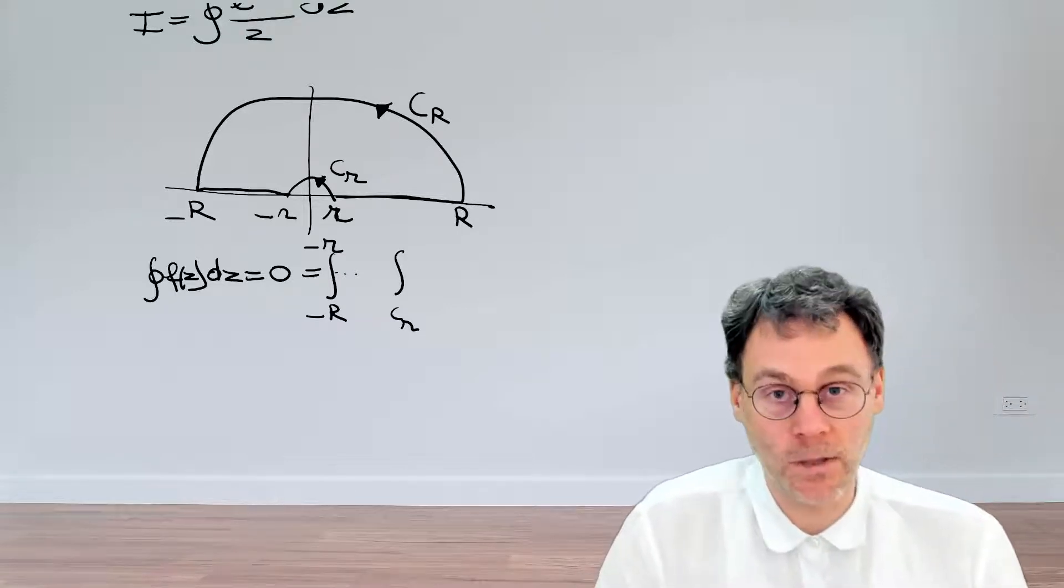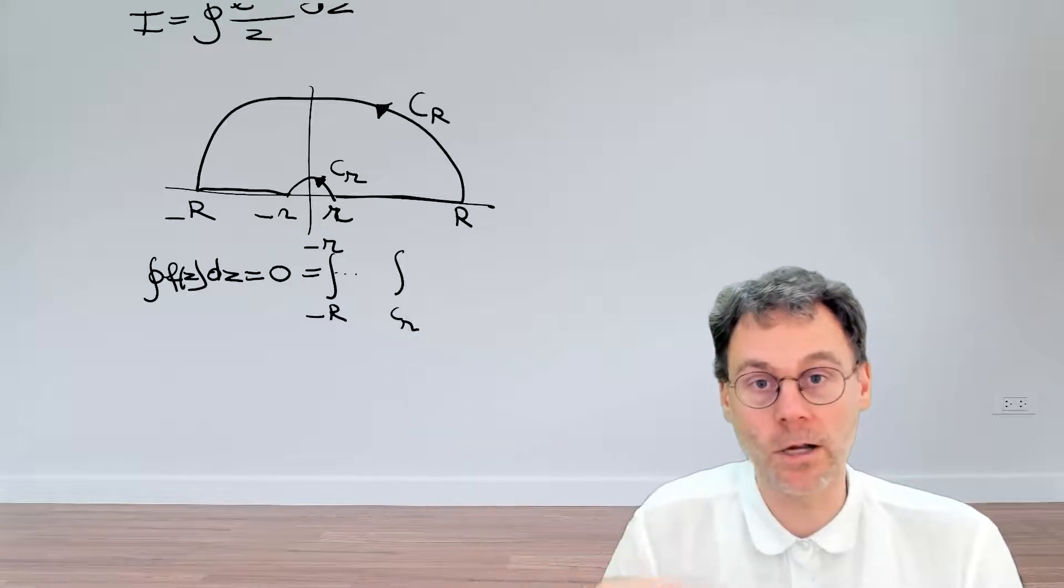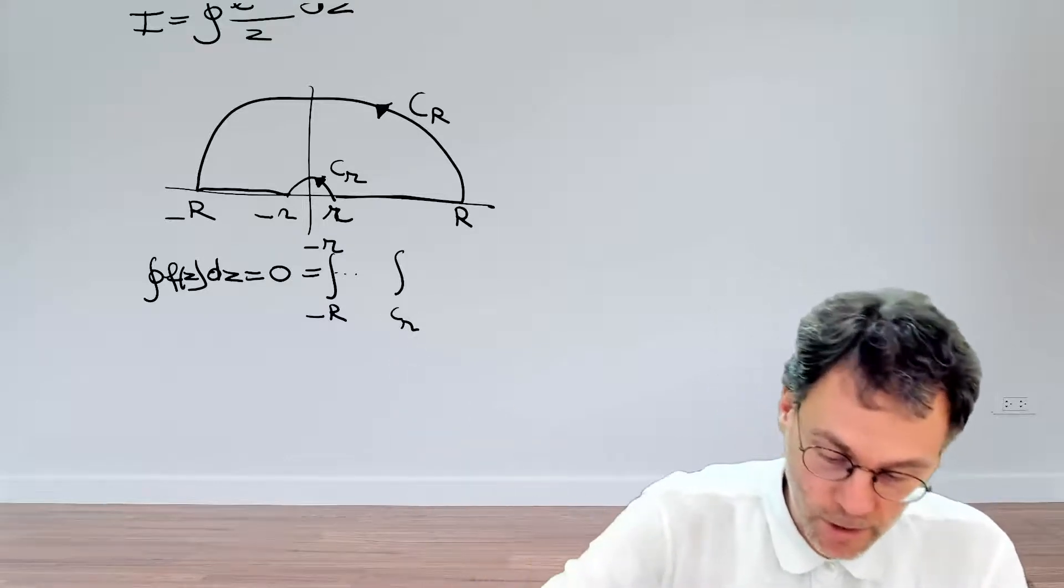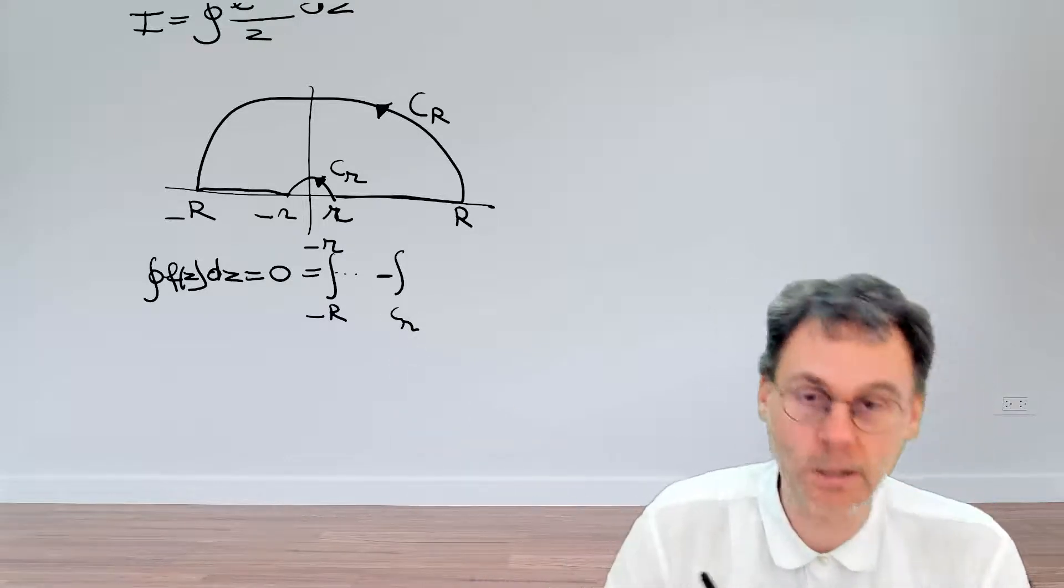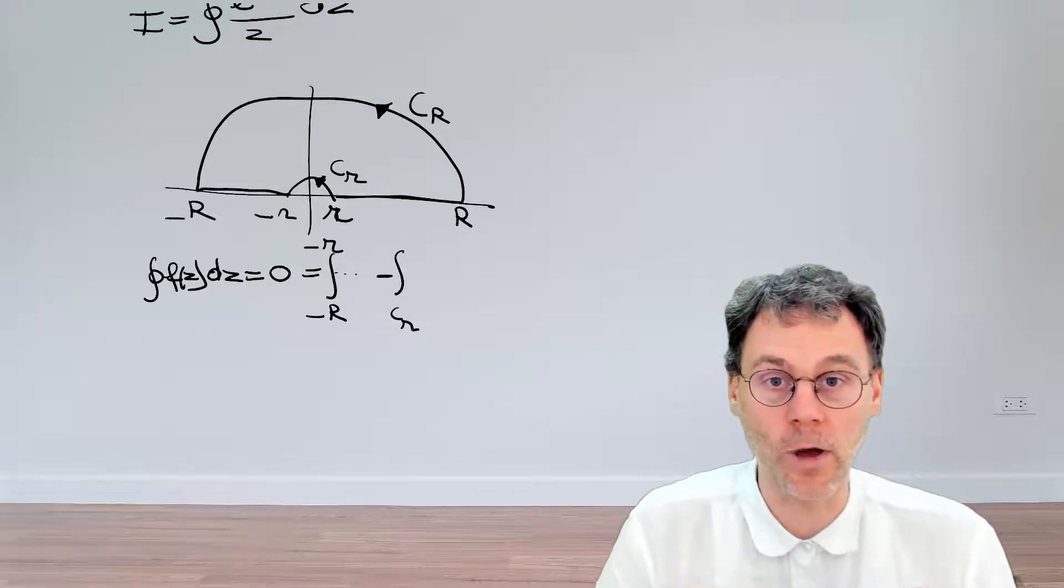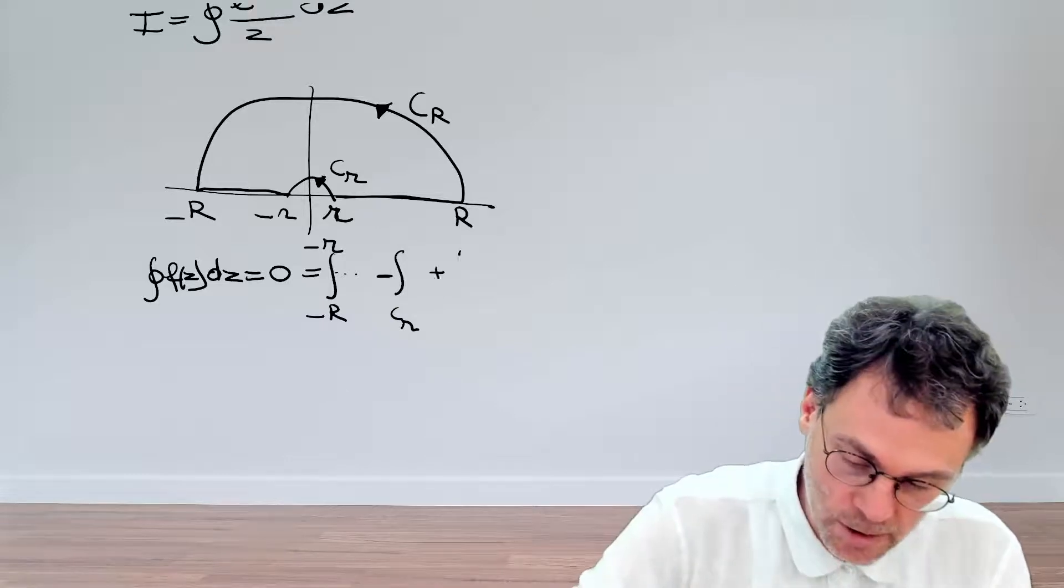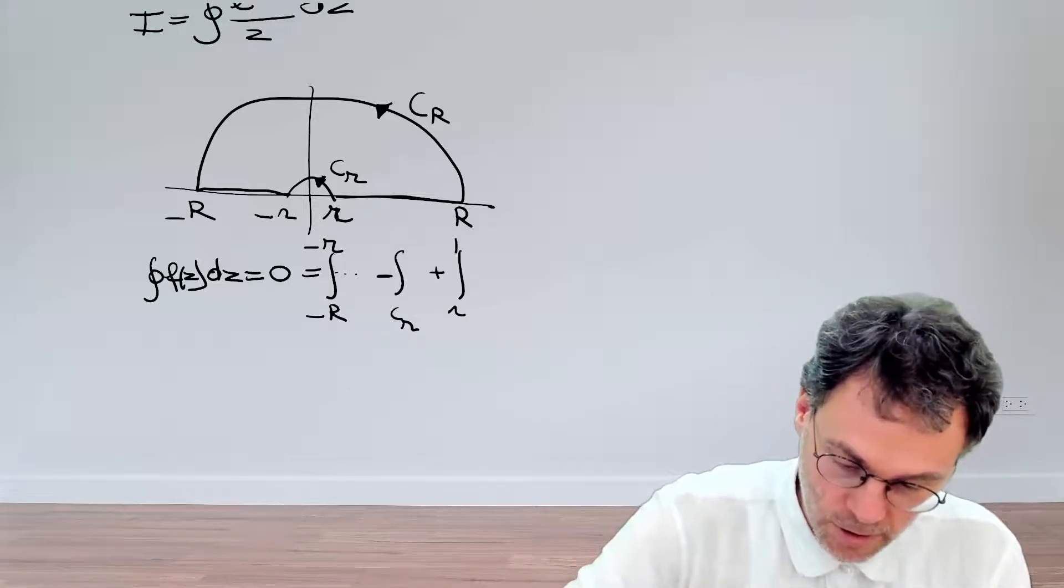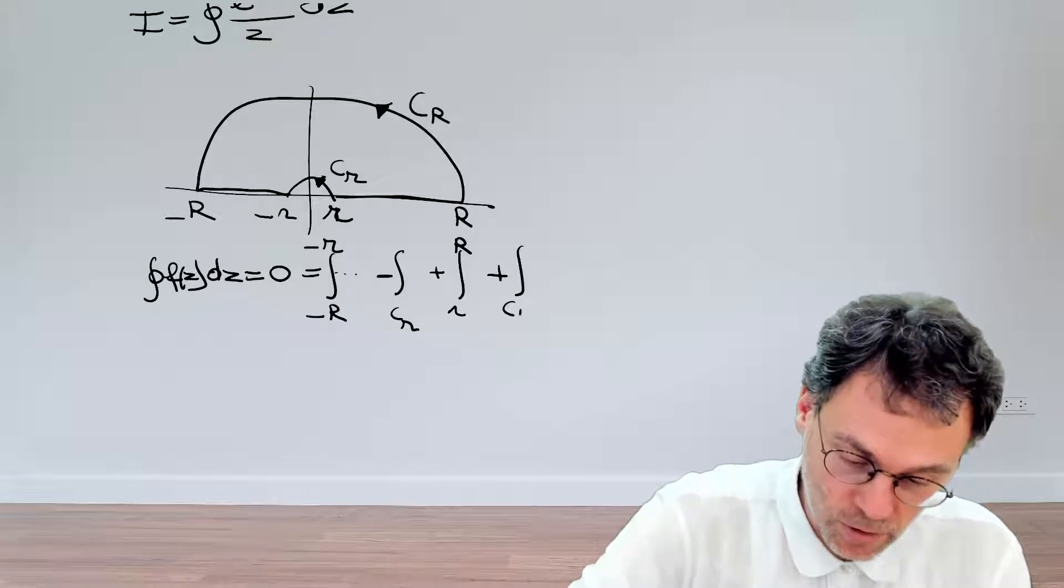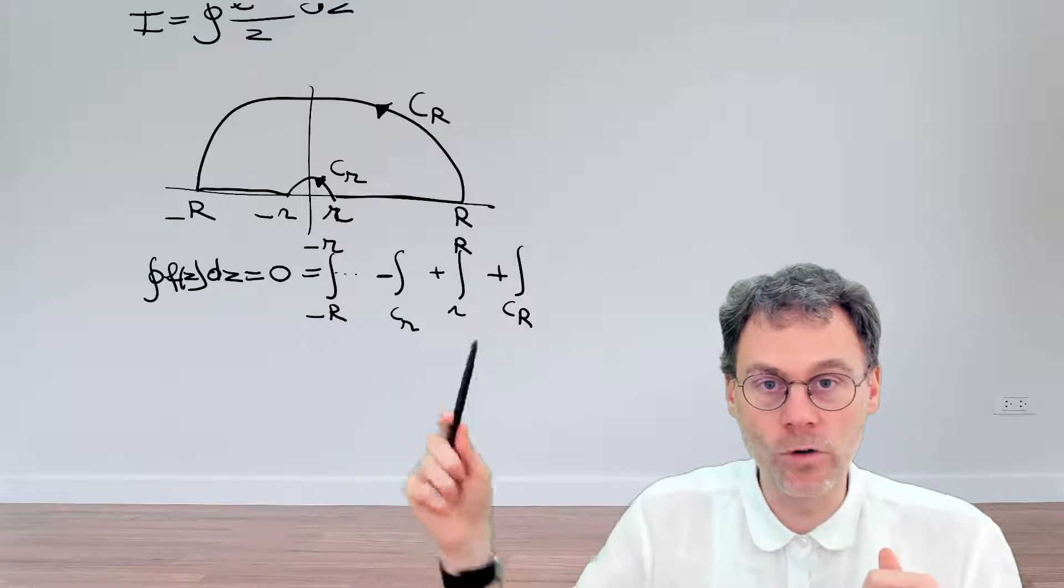we actually need to traverse C little r in the clockwise direction. But if we write down the following integral over C little r, that actually means by convention that we run through C little r in the counterclockwise direction. So therefore, to correct this, we need to have another minus sign in front of this second term here. Okay, let's continue. Contribution of the positive real axis. That's the integral like so. And then finally, we have our big circle over there. So these are the four contributions.